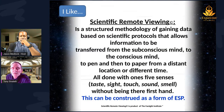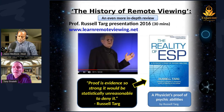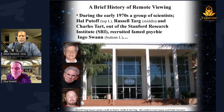Scientific remote viewing is a structured methodology of gaining data based on scientific protocols that allows information to be transferred from the subconscious mind to the conscious mind to pen and then on to paper from a distant location or a different time — all done with one's five senses: taste, sight, touch, sound, and smell, without being there firsthand. This can be construed as a form of ESP — extrasensory perception. There's scientific research behind all of this, and Stanford Research Institute put a lot of time and money into it.